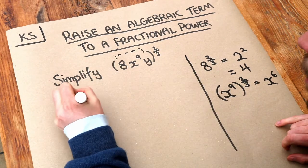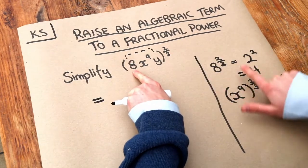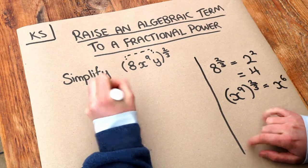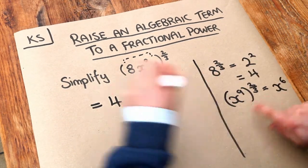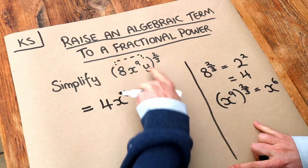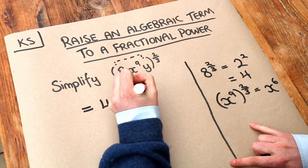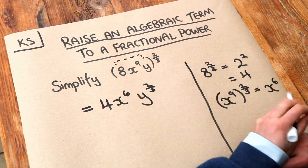So now we can work this out. The 8 to the two-thirds we saw was 4, the x to the 9 to the two-thirds was x to the 6, and then we've got the y to the power of two-thirds. That is the final answer.